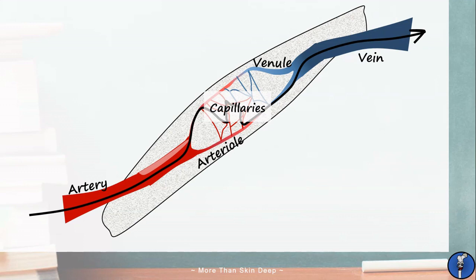Arterioles branch into small capillaries which have thin walls to facilitate exchange and these capillaries condense back into venules which have a large lumen and perform a similar job to arterioles. Finally, venules join together to produce veins which carry blood back to the heart.